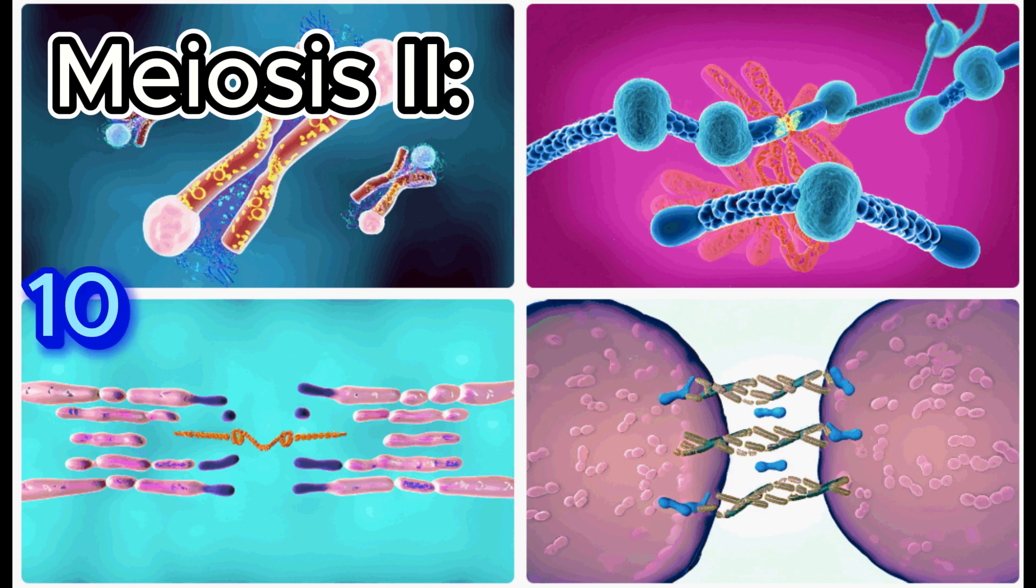Number 10: Cytokinesis. The cell fully divides, separating the cytoplasm into two daughter cells. At the end of meiosis II, four haploid cells are produced, each containing half the number of chromosomes as the original cell. These are the 10 steps of cell meiosis, which occur in two consecutive cell divisions and result in the formation of haploid cells, crucial for sexual reproduction and gamete production.